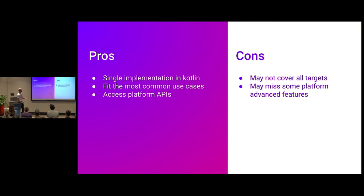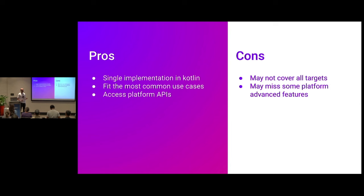The pros of these libraries: you have a single implementation in Kotlin that is multiplatform, you don't have to worry about the actual implementation, it fits most use cases, and you can still access platform-specific APIs if you need to. The cons: a library may not target all platforms — it's very common that some don't support web, and they may miss some very advanced features. For instance, if I go back to my camera example, on Android you can now do HDR photography, but you may not have access to those HDR APIs through the abstraction.